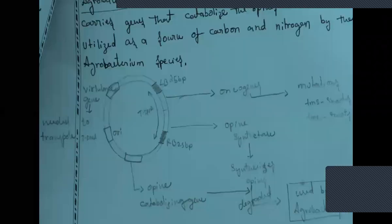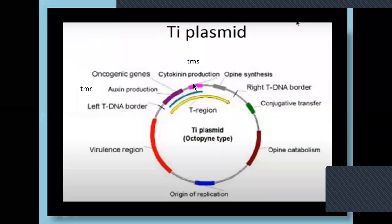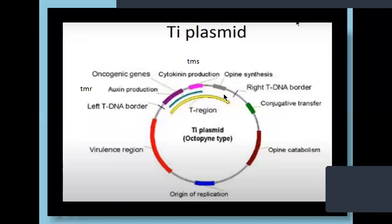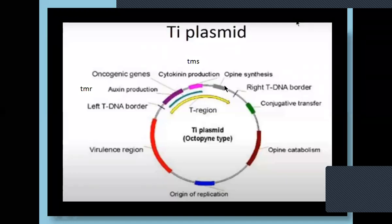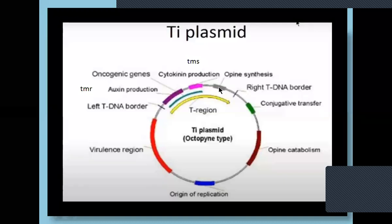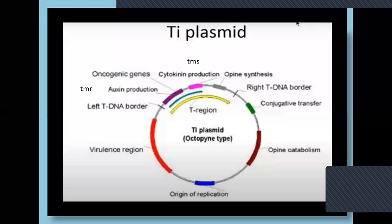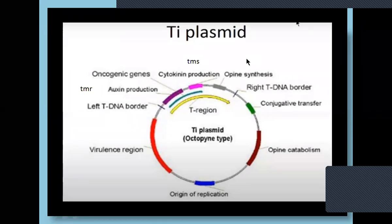In the T-DNA, we have the auxin production region and the cytokinin production region — together called the oncogenic genes. Next, we have the opine synthesizing region. Opines are used by the bacterium. When this T-DNA gets into the plant genome, the bacteria have to survive in the plant host. So this T-DNA, by integrating into the plant genome, starts producing opines. Opines are nutrients — carbon and nitrogen sources — for the bacteria. Each strain of Agrobacterium and Rhizobium induces and catabolizes a specific set of opines.